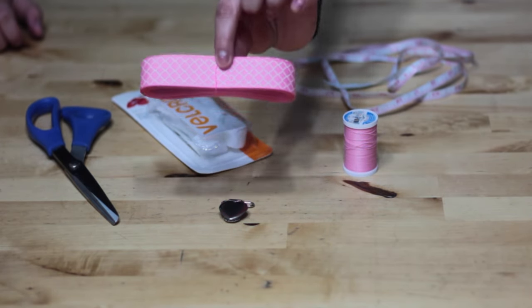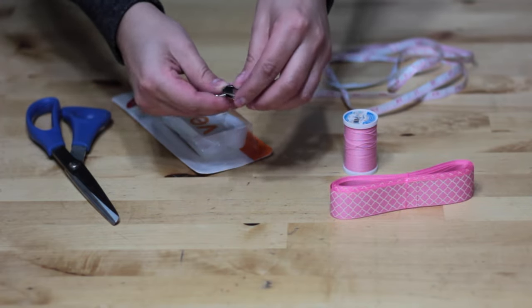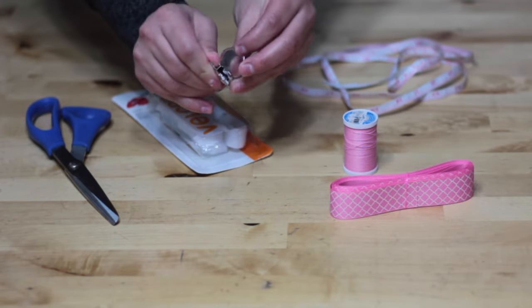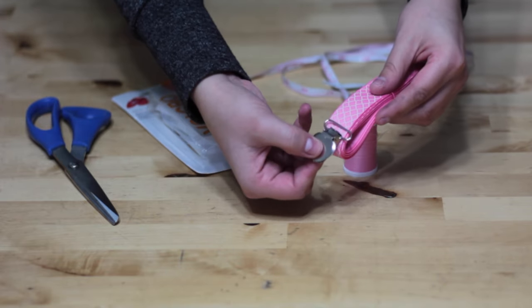The supplies you're going to need for this DIY are one inch wide ribbon. You'll also need a suspender clip or a mitten clip that has a one inch wide end so that you could sew your ribbon onto it.